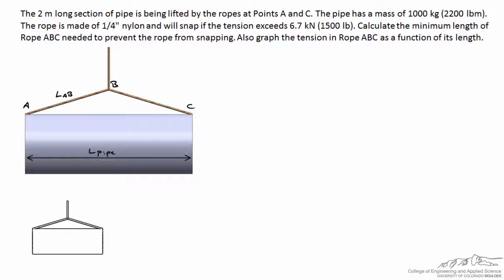Let's begin by drawing a free body diagram of the whole system. When you draw a free body diagram, you draw just the outline of the object and all the forces acting on it. We've got gravity acting downward at the center of mass, and the tension in the vertical section of rope, which I'll call T1. Note that I'm not including the tension in rope ABC because it's internal to the system — it's an internal force and doesn't appear on the free body diagram.